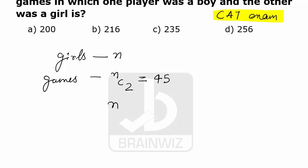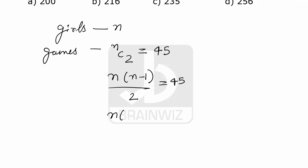So n into n minus 1 by 2 equals 45. Here n into n minus 1 equals 90, and 10 into 9 makes 90. N value stands for 10. So there are 10 girls.